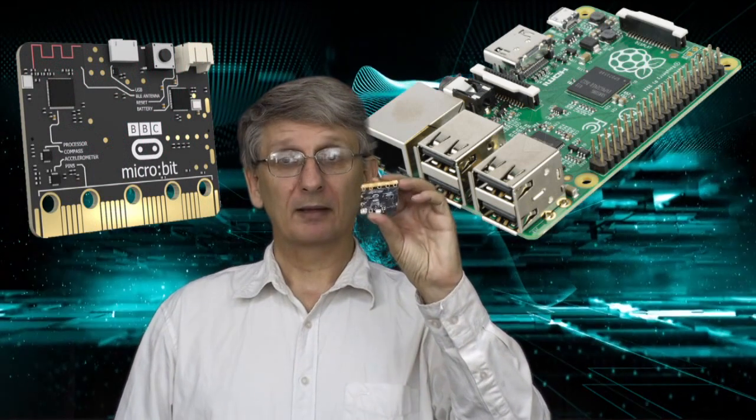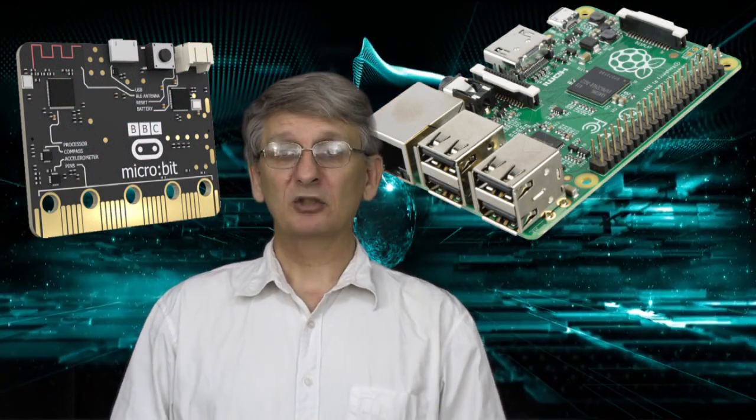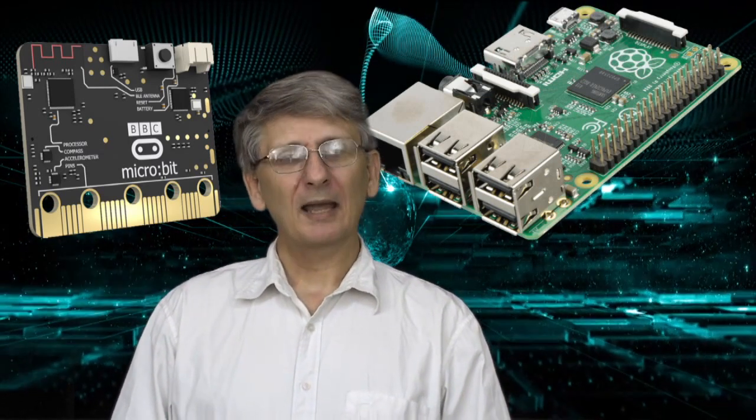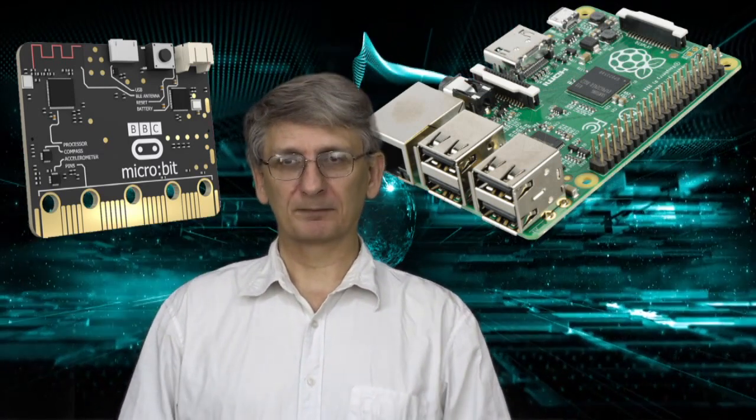We also have single board microcomputers, such as the Raspberry Pi and the BBC Microbit. The BBC Microbit has been distributed to every 7th grader in the United Kingdom. They're a step up from Arduino boards. They have the ability to run an operating system, a simple one, but an operating system.